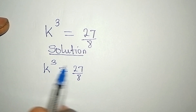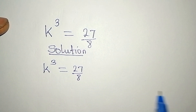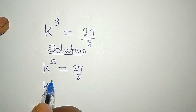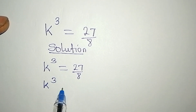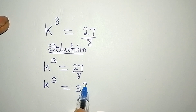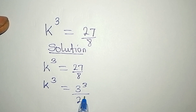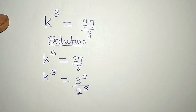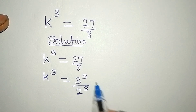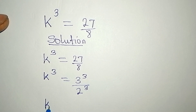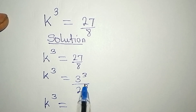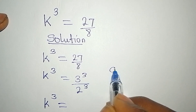Because I have a power of 3 on the left, I can arrange this to have a power of 3 on the right. So we have k³ equal to 3 to the power of 3 over 2 to the power of 3, because 2³ is 8 and 3³ is 27.